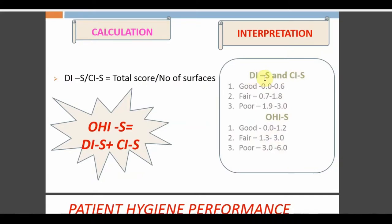In OHIS, four teeth are assessed on the buccal surface and two (36 and 46) on the lingual surface. OHIS categories: DIS and CIS — Good: 0–0.6; Fair: 0.7–1.8; Poor: 1.9–3. OHIS overall — Good: 0–1.2; Fair: 1.3–3.0; Poor: 3.1–6.0. These categories are not present in OHI — they apply only to OHIS.